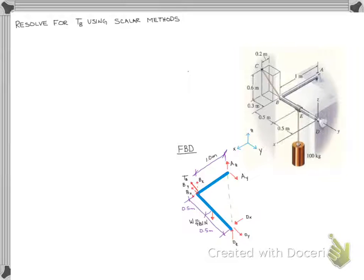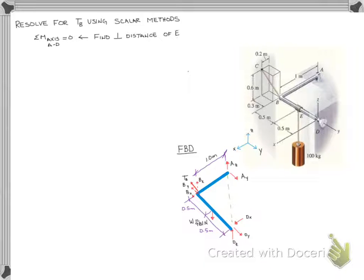If we're going to solve this with scalar methods, we need to remember that when you have moments, we can sum moments about an axis. We can still sum moments about axis AD, just like we did in the first example — we've drawn that green line in our free body diagram from A to D. But if we're going to do this, we've got to find the perpendicular distances, because with scalar methods our equations are force times perpendicular distance.